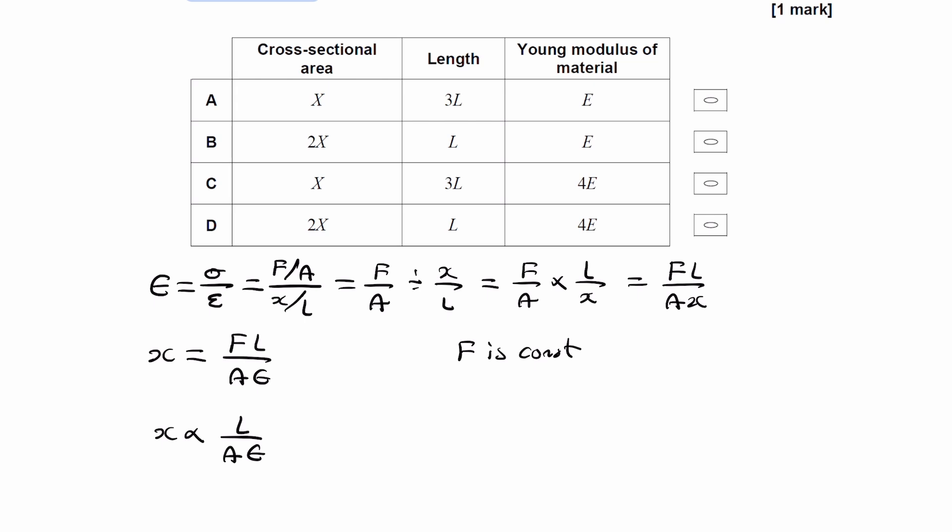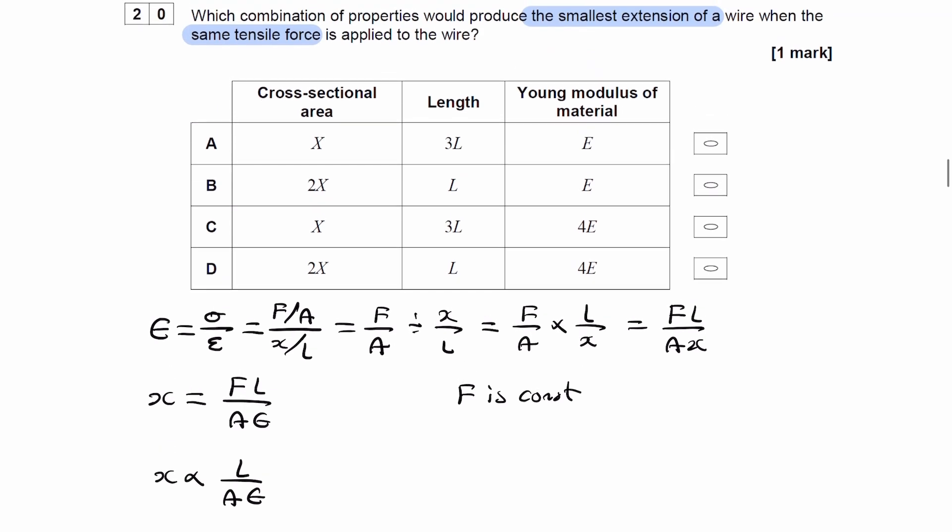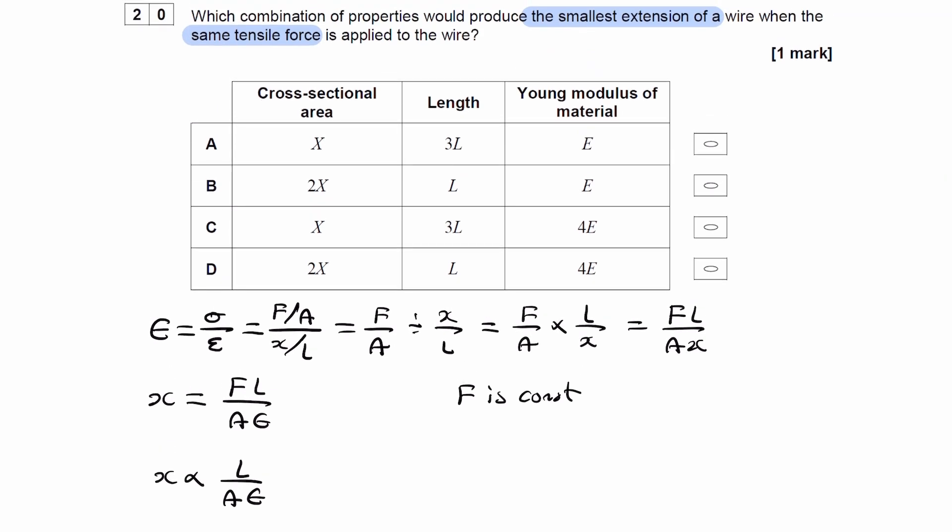And then we can look at the table that we have here. So we're trying to make X as small as possible, so therefore we want to make this fraction as small as possible. So we're doing length divided by cross-sectional area times Young's modulus. All of these things contain X, all of these contain L, all of these contain E, so we're only interested in the factors in front of those symbols.